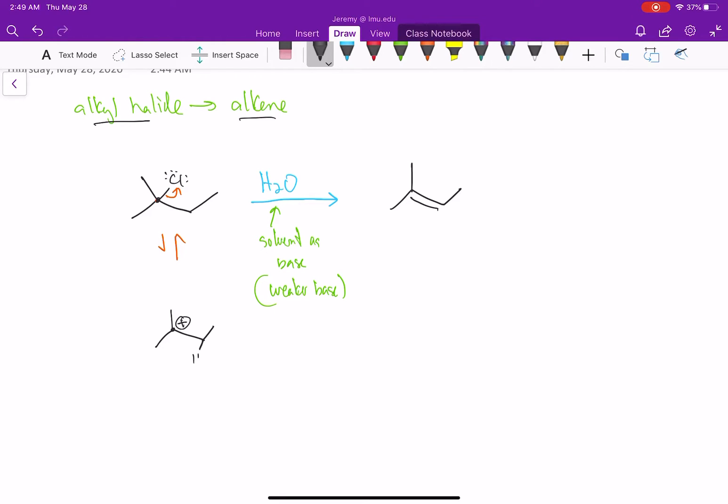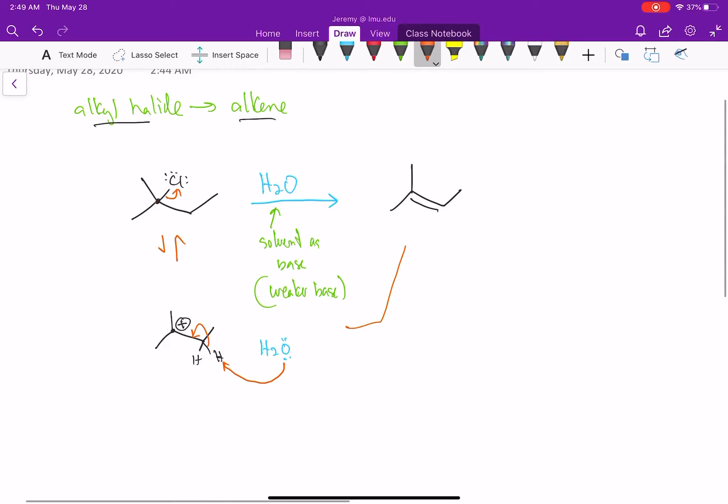And then in the next step, our weak base here, our water, is going to be taking away one of the H's. Again, we always want to form the most stable alkene that we can, so I'm going to be abstracting the hydrogens to form the most stable alkene. That'll be here. So now my lone pair is going to come in, form a new bond to the H. The carbon-hydrogen bond is now going to form our double bond. And that's the reaction.